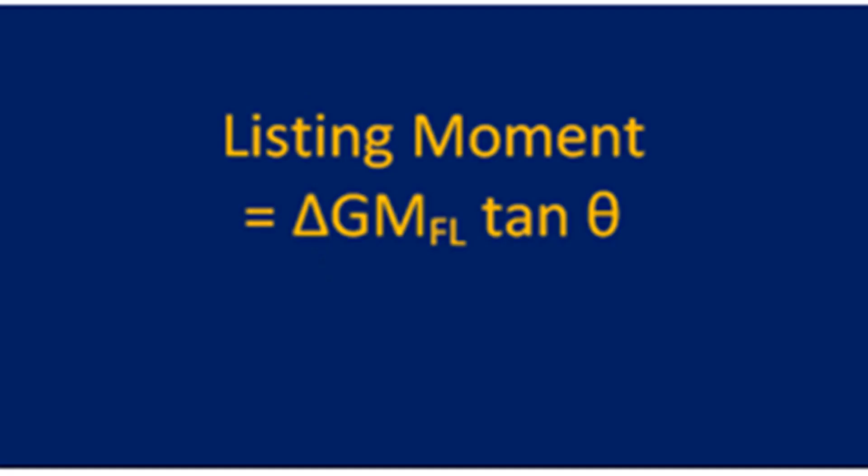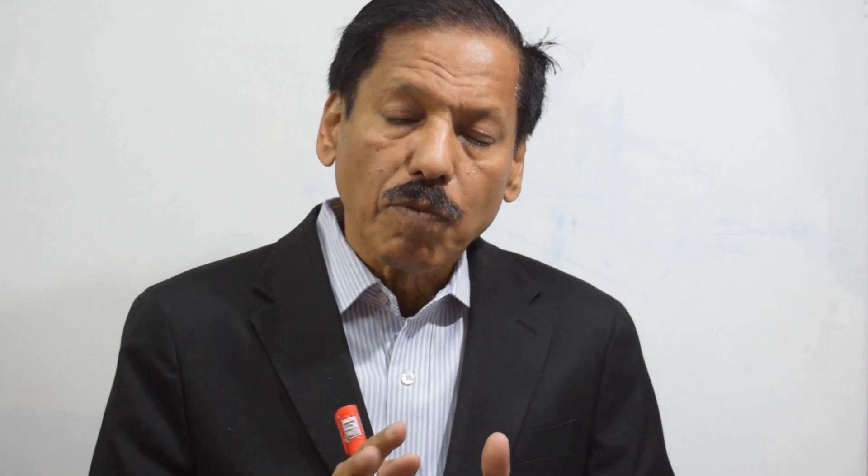There are basically three types of list questions. Category 1 is when the vessel is upright and we do a certain operation on the ship. Type 2 is when the vessel is already in a listed condition and we do some more operations and get a resultant list. Type 3 is when a vessel is listed and you want to correct the list. Let us look at the Type 1 problem where the vessel is initially upright.